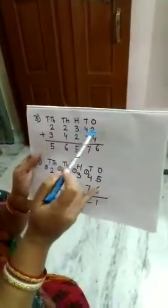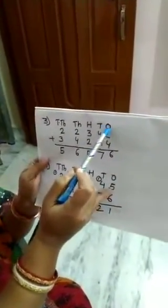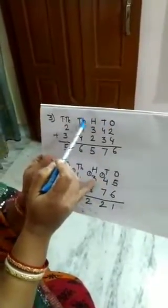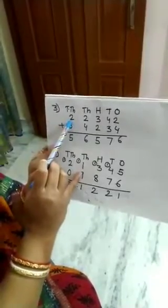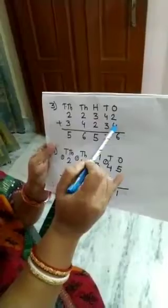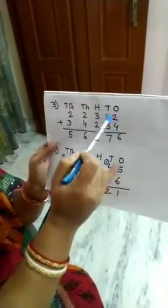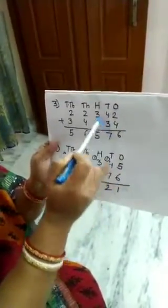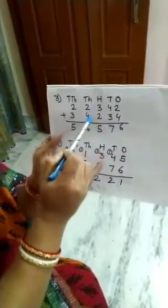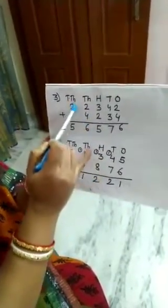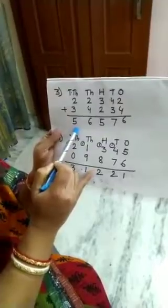Add with 5 digit number. I mean 1, 10, 100, 1000, 10,000. 5 digits number. So this is the number. Now we will add 2 plus 4, 6. 4 plus 3, 7. 3 plus 2, 5. 2 plus 4, 6. 2 plus 3, 5. This is simple addition.